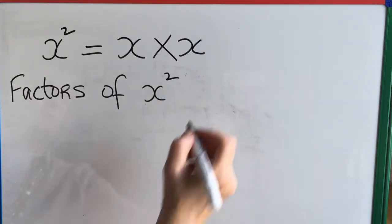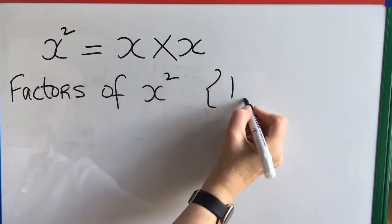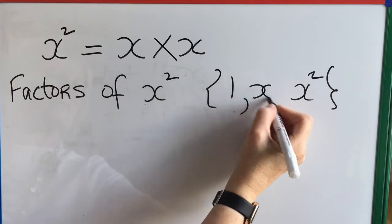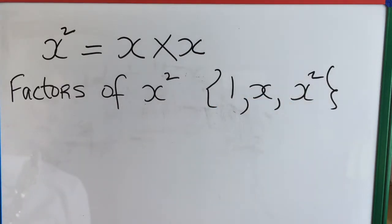Now remember x squared equals x times x. So writing down again the factors of x squared: 1 and x squared itself and x.